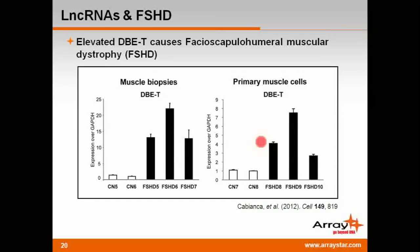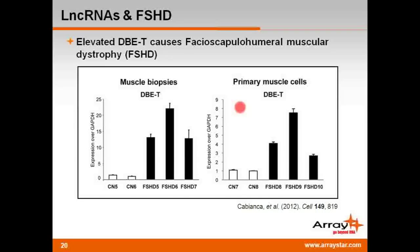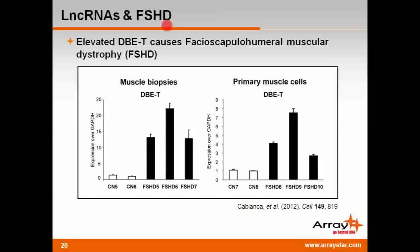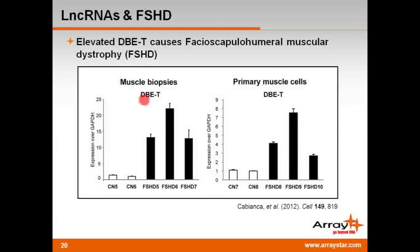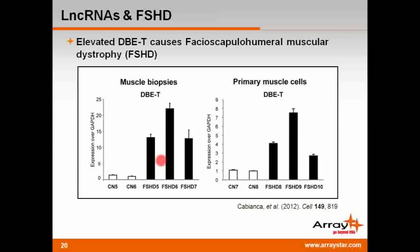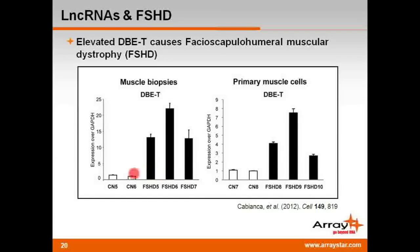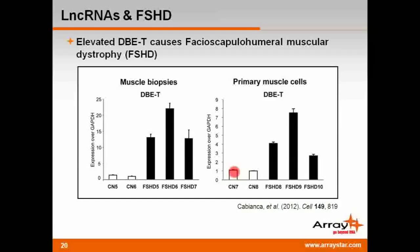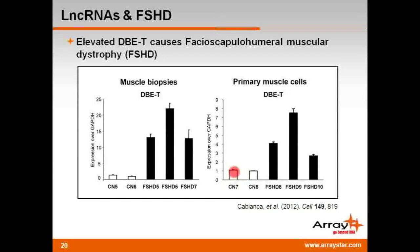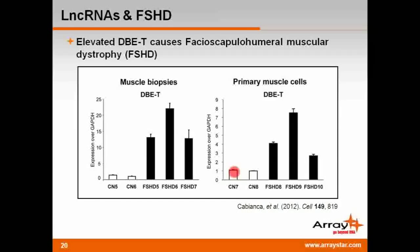Another example of a disease caused by aberrant expression of an LNCRNA is facioscapulohumeral muscular dystrophy, or FSHD. This figure is from a paper out of David Gabellini's lab, who used qPCR to analyze the expression of the LNCRNA DBE-T in both muscle biopsies and primary muscle cells. In both cases, the level of DBE-T RNA is much higher in muscle tissues taken from FSHD patients than from healthy individuals. The authors showed that the aberrant DBE-T expression causes FSHD by bringing the protein ASH1L to a genomic locus containing repeat sequences, causing chromatin remodeling and FSHD-associated repeat instability.